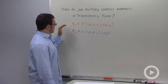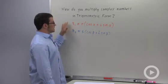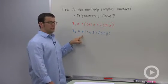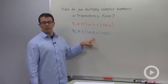Let's start with two general complex numbers, Z1 and Z2. Z1 is R times cosine alpha plus I sine alpha, and Z2 is S times cosine beta plus I sine beta.